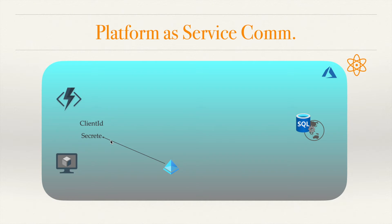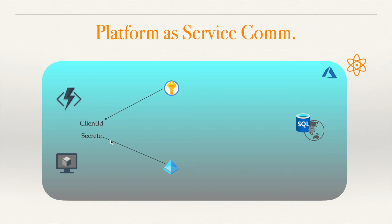The client ID and secret is the client ID and secret of your service principal. The .NET library invokes a call to Active Directory and generates a bearer token. Once the bearer token is there, it asks the Key Vault to grab the secret using that bearer token — meaning the service principal must have access to the Key Vault. Once you have the secret, you connect to the database. This is the typical flow, but in this case you still have the client ID and secret stored in your application config.